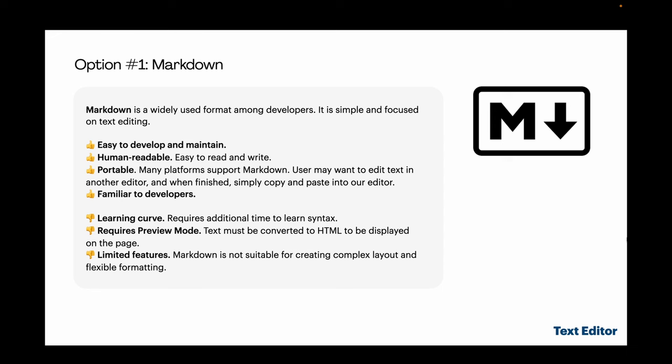The next popular option is markdown. Markdown is popular among developers for its simplicity and focus on text editing. It's easy to develop and maintain, human-readable, portable across platforms, and familiar to the developer community. However, it has a learning curve, requires a preview mode as text must be converted to HTML for display, and is limited in creating complex layouts. Markdown is suitable if it meets our requirements, but it works well for developer-centric sites like GitHub or Stack Overflow and is less suitable for a general audience like Quora.